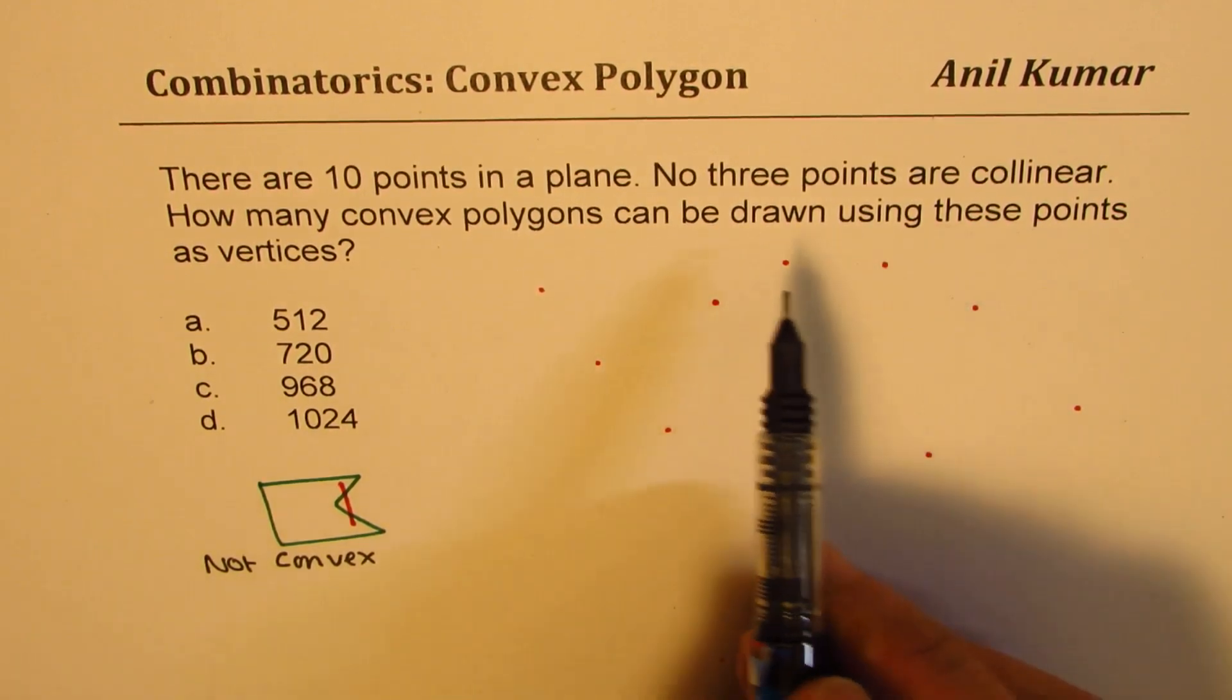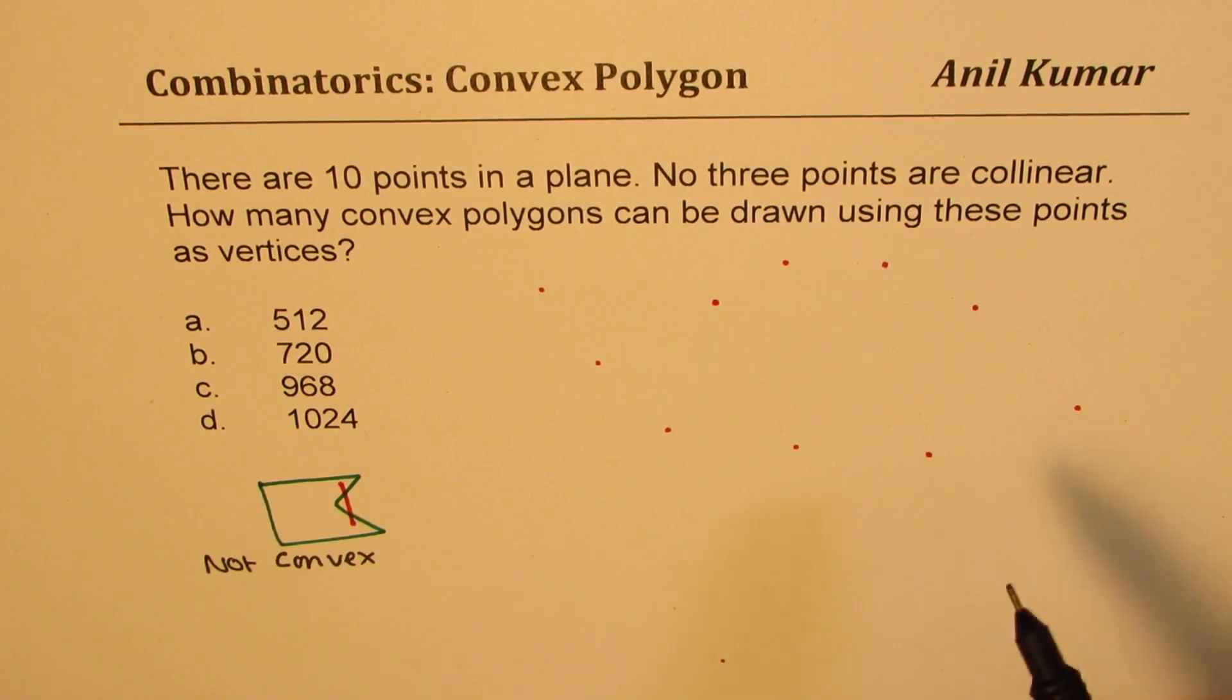Here is how we could actually make an attempt to solve this. So it says possible, right? So it is not ensuring that you will have those many polygons. So keep that in mind. That's a very difficult question to ensure how many will be there. But how many possible are there, we can write maximum possible, right?